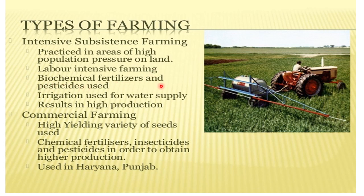Biochemical fertilizers and pesticides are used to protect the crop and increase production. Irrigation is used for water supply, unlike in primitive subsistence farming where farmers are dependent on rain. Due to these methods applied, the yield is high — farmers produce a high amount of crops.